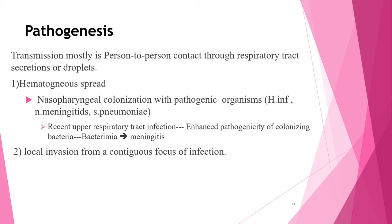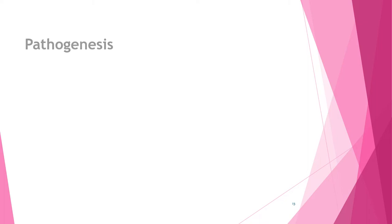After attachment to epithelial cells, bacteria breach the mucosa and enter the bloodstream — various models of invasion have been developed for different bacteria. Overall, nasopharyngeal colonization with pathogens such as H. influenzae, Neisseria meningitidis, and Streptococcus pneumoniae is the first step. If there is a recent upper respiratory tract infection, this enhances pathogenicity and causes bacteremia, then meningitis. Local invasion from a contiguous focus such as otitis media or sinusitis is another pathway.